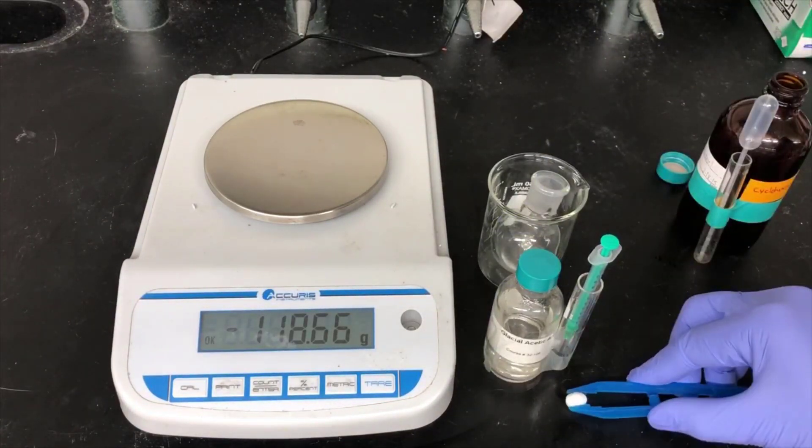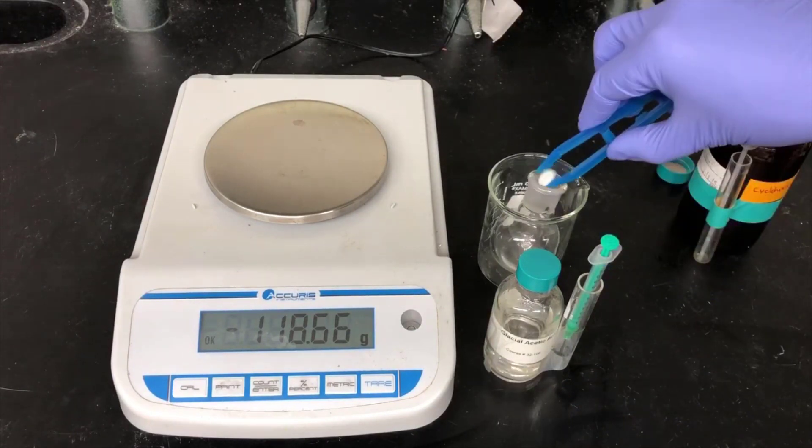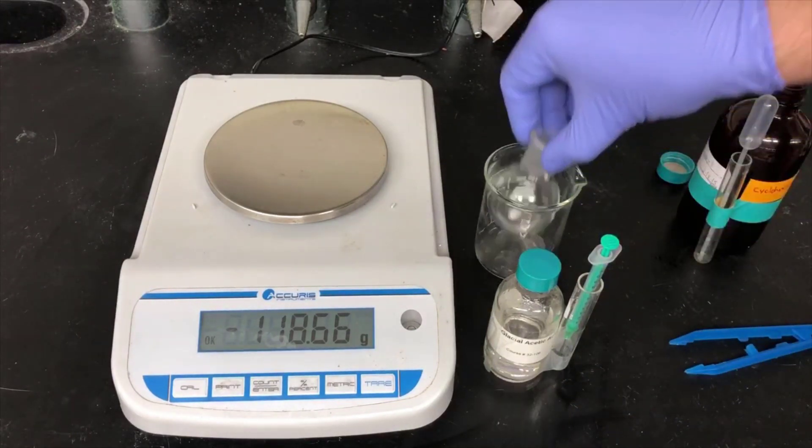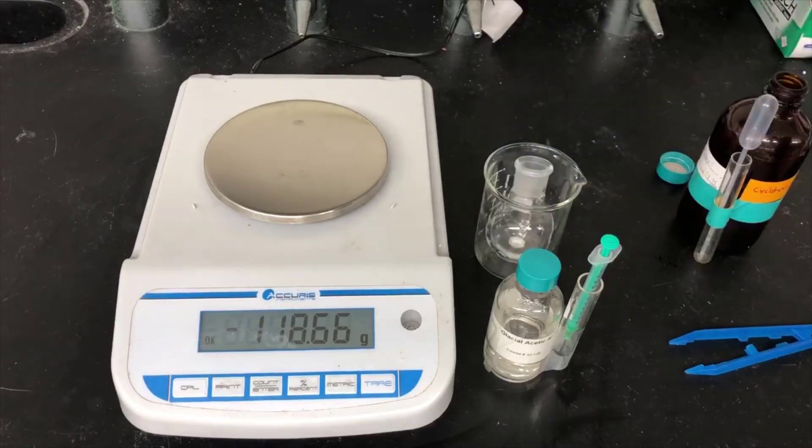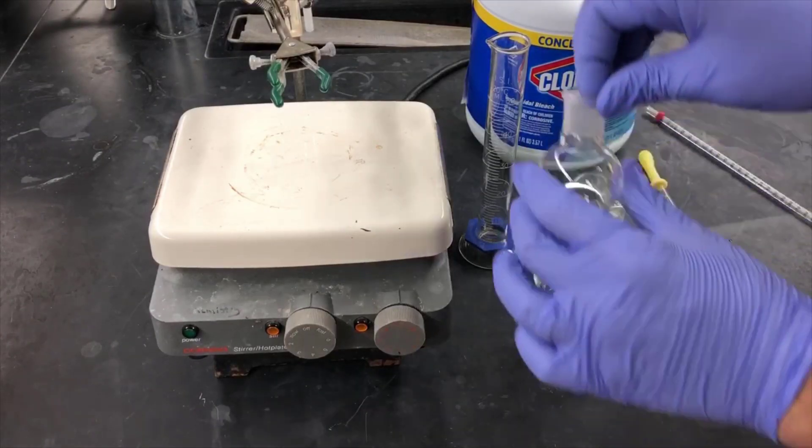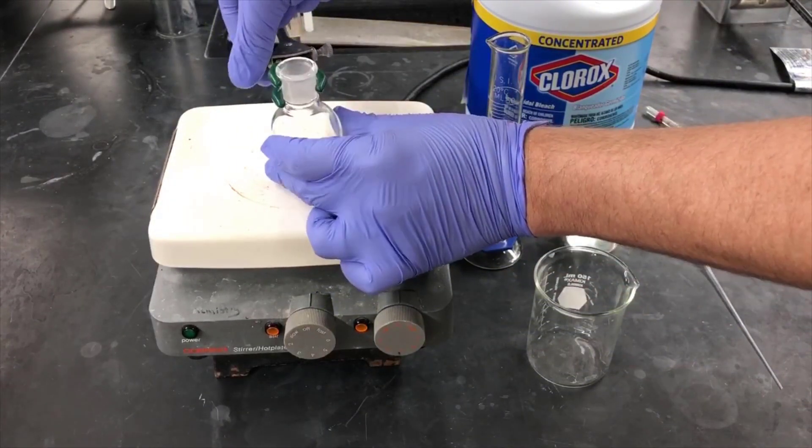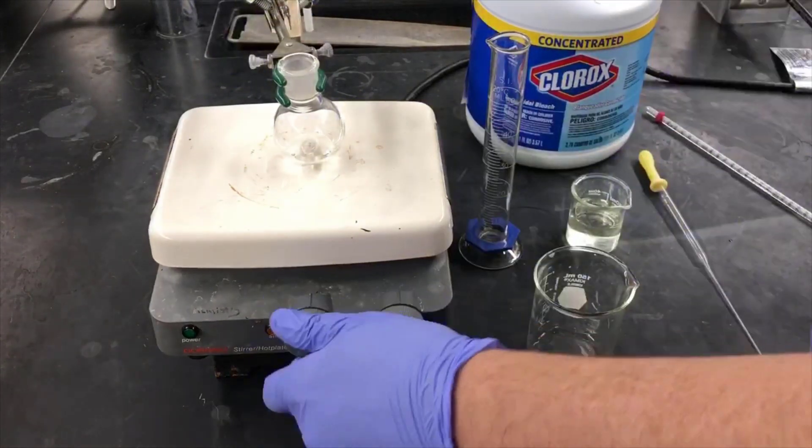Then I'll add a small magnetic stir bar. Now I'm clamping the flask above a stir motor, and I'll get the stirring going briskly.